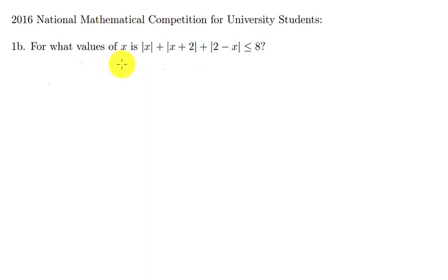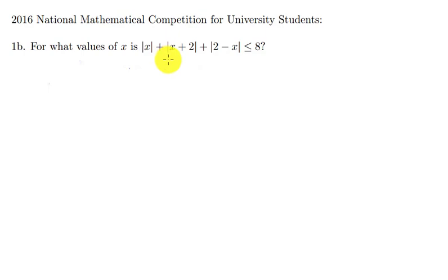Now remember that anytime we want to solve an absolute value problem we try to remove the absolute value sign. Since we know that the solution will be on a real line, we can partition the range of variables into several intervals. To do that we set each expression in the absolute value sign to be zero.